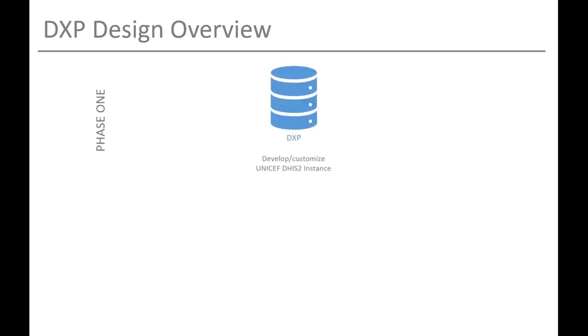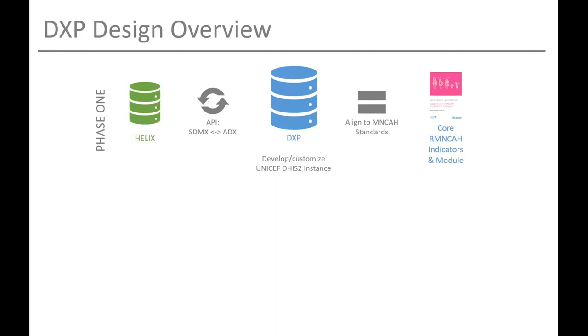Now let's talk about DXP. Phase one, completed in March of this year, involved developing the DXP, which is the intermediary platform developed in DHIS2. It's aligned to the core health indicators from survey estimates and the core RMNCH WHO UNICEF package for in-country facility reported indicator definitions. We developed an ETL that can call data from the UNICEF global databases through the Helix RESTful API. Those data are restructured to the ADX standard and stored in the DXP platform where they can be made available to countries.